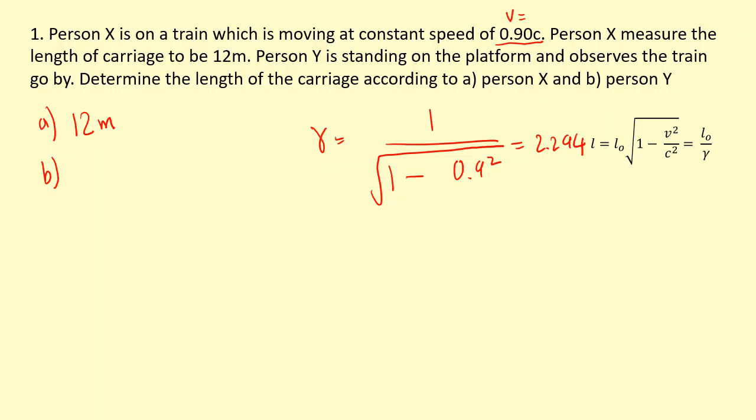So I know that person Y will see the carriage being narrower, so I'm going to take 12 meters and divide that by the Lorentz factor because I know that will make it smaller. So that's 5.23 meters.